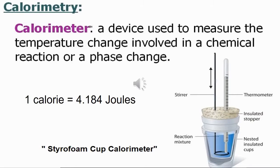Calorimetry by definition is the science of measuring heat, based on observing the temperature changes of a body when it absorbs or releases energy in the form of heat. The calorimeter is a device used to calculate energy, but it does not actually measure energy directly — instead it measures the temperature change involved in a chemical reaction or a phase change, and we use this data to calculate the energy and the specific heat. Calorimetry comes from the word calorie, which is the unit used to measure energy.